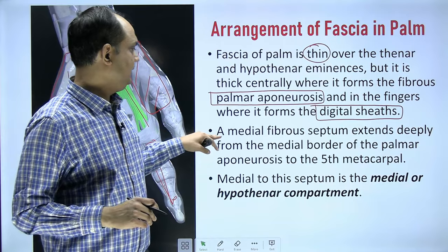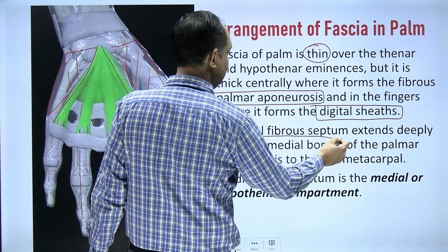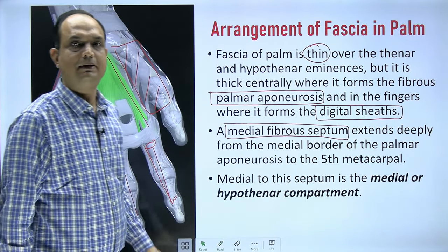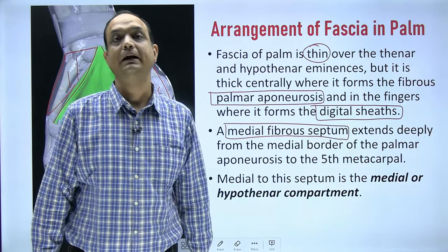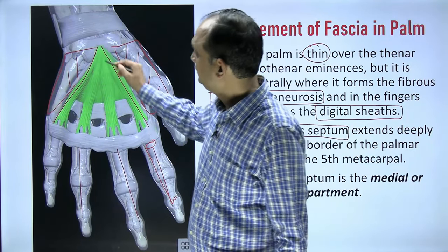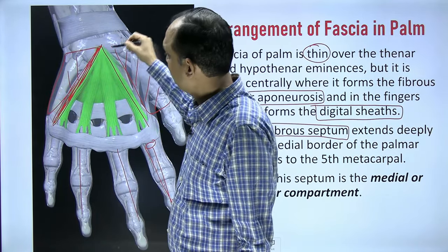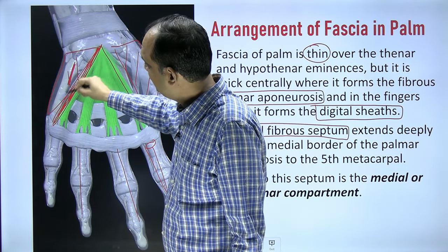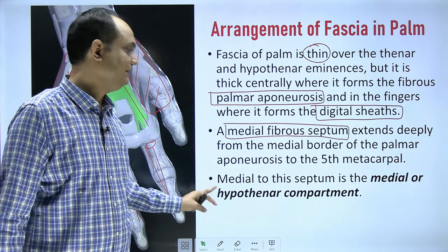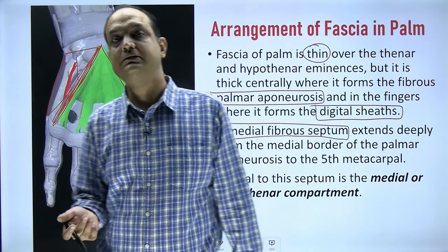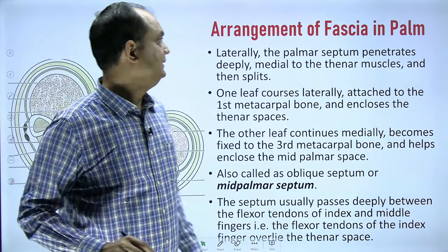There is a medial fibrous septum that extends deeply from the medial border of the palmar aponeurosis to the fifth metacarpal. From the medial border, this septum goes downward and attaches to the fifth metacarpal. Medial to this septum you have a compartment that consists of the hypothenar muscles.